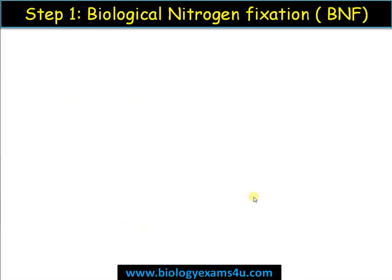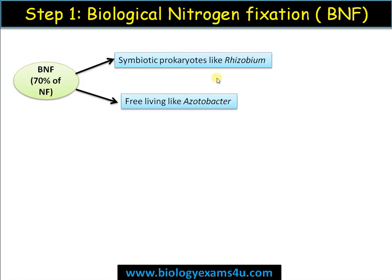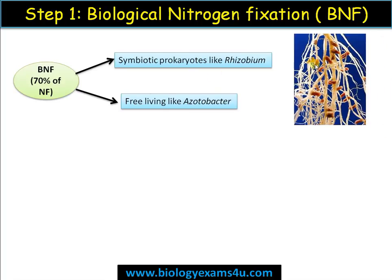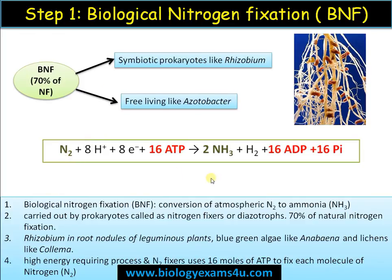The most important method is biological nitrogen fixation, carried out by prokaryotic organisms or bacteria. Biological nitrogen fixation accounts for 70% of total nitrogen fixation. It is carried out by symbiotic prokaryotes like Rhizobium, present in root nodules of leguminous plants, and free-living nitrogen fixers like Azotobacter. This Rhizobium colony converts N2 to NH3, which can be taken up by the plants. In return, the plant provides food and shelter for the bacteria. The reaction requires 16 ATP molecules to fix one molecule of nitrogen.